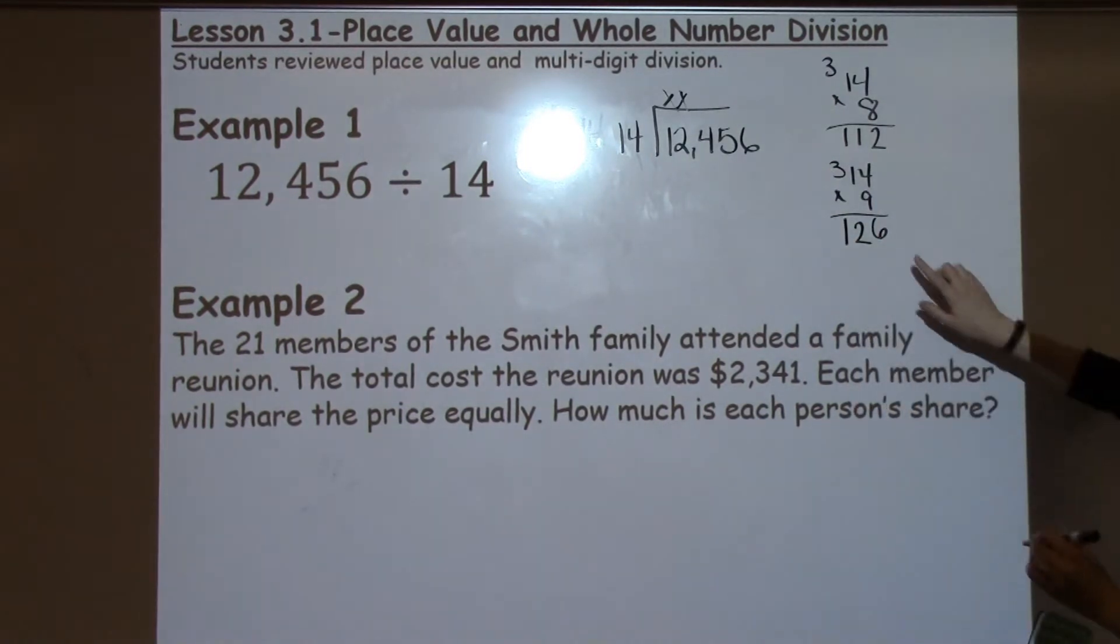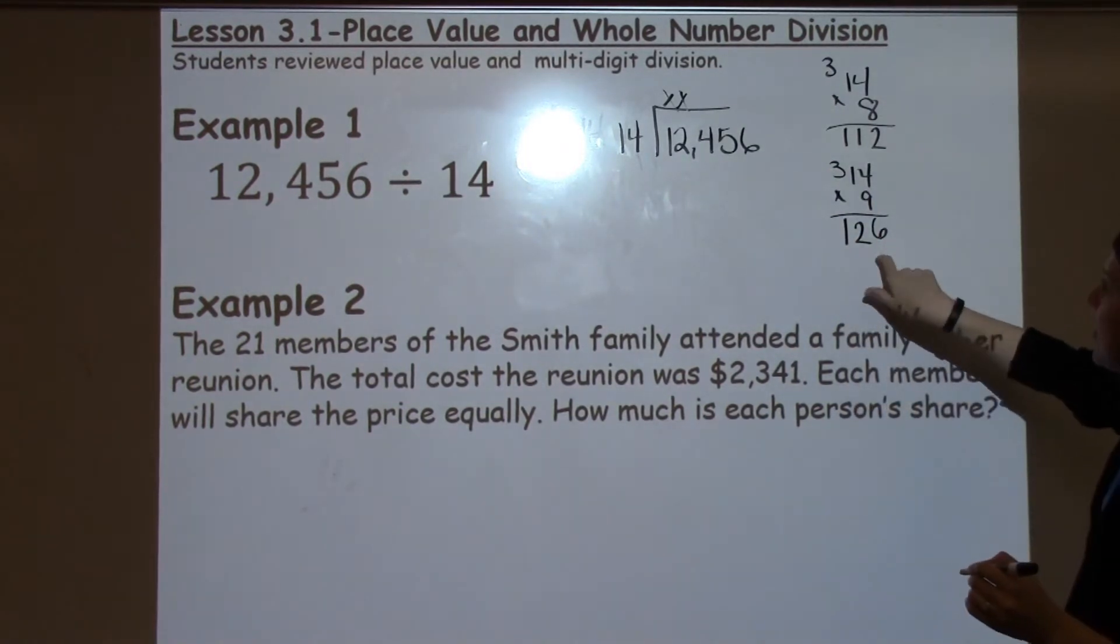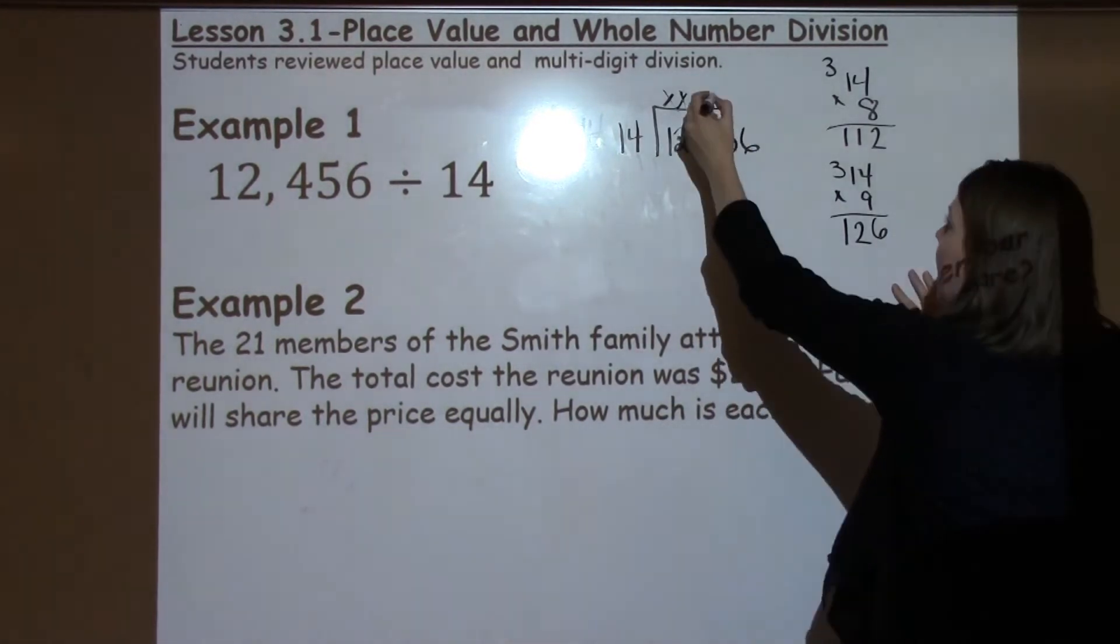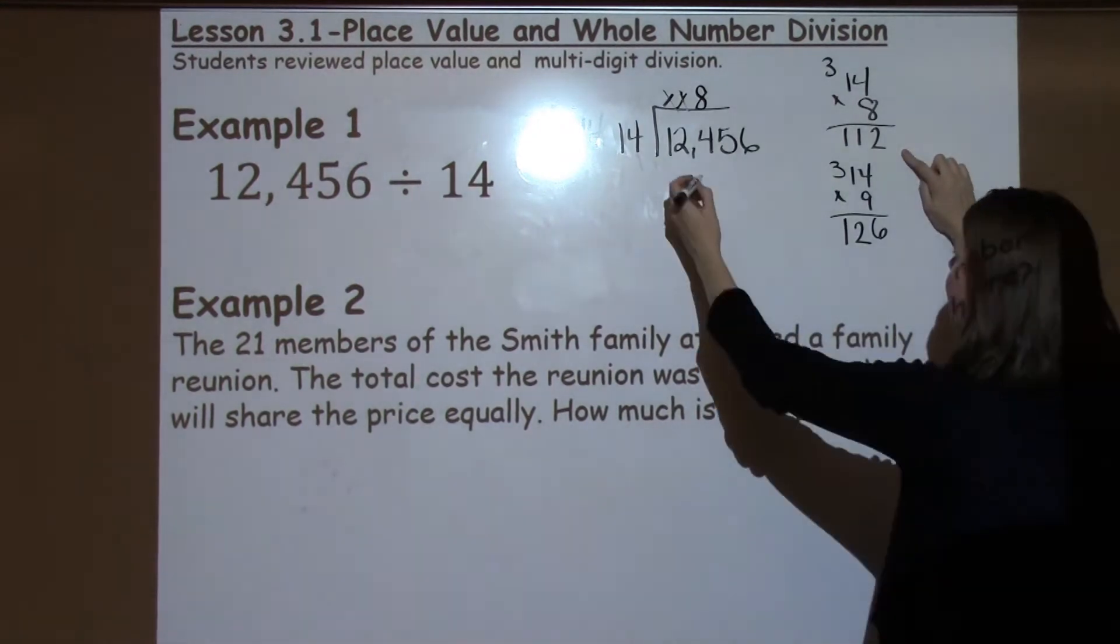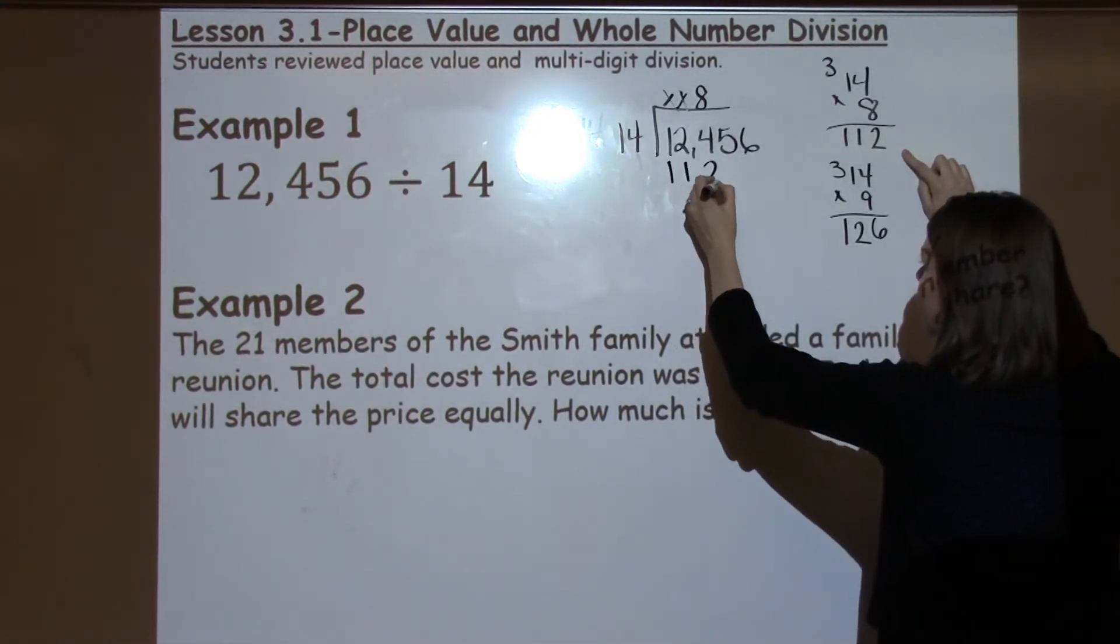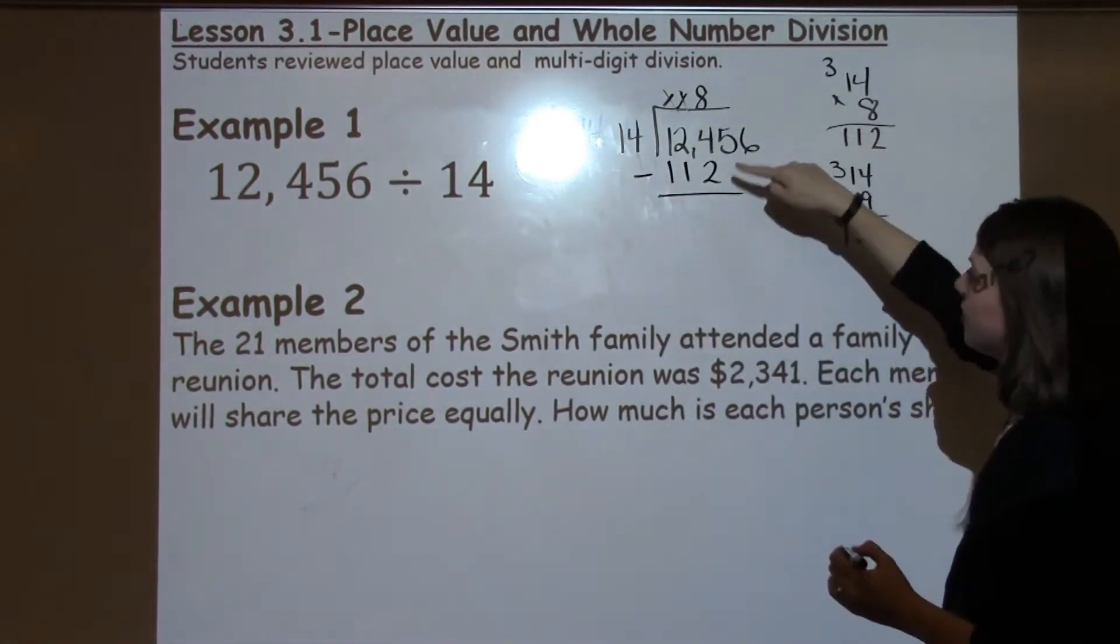I know 14 times 9 is 36. I have 1 times 9 is 9, plus 2 more is 12. So I have 126. Looking at this, this one is slightly over, so I need to use my 8. 8 goes on top of my 4. 8 times 14 is 112.